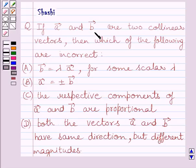if A vector and B vector are two collinear vectors, then which of the following are incorrect? A, B vector is equal to lambda multiplied by A vector. For some scalar lambda,